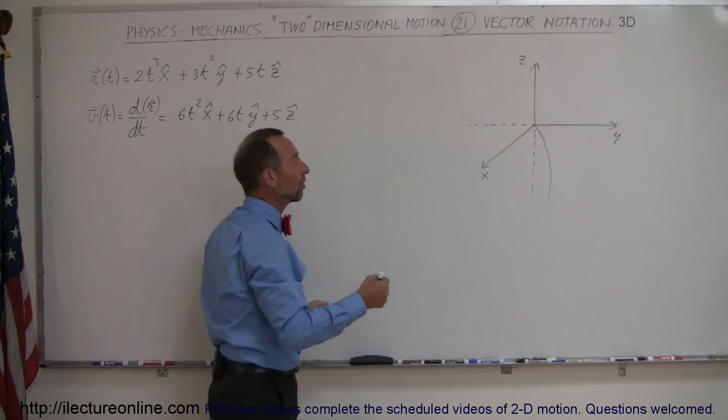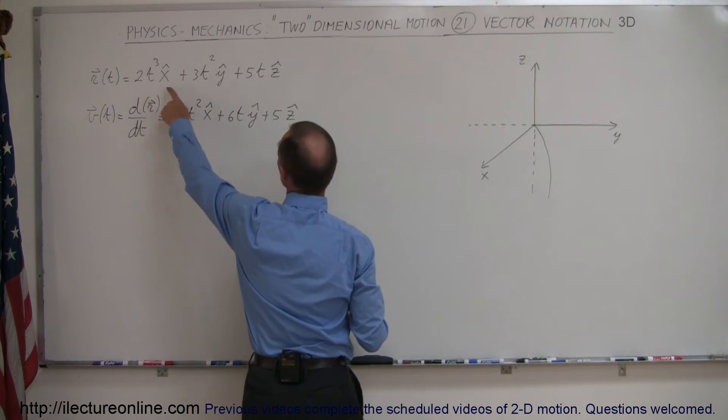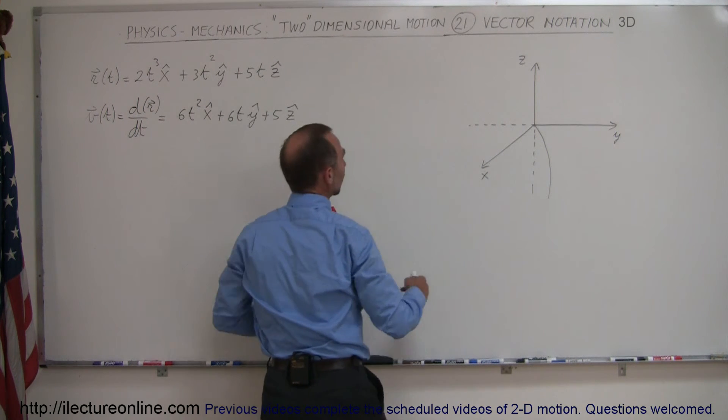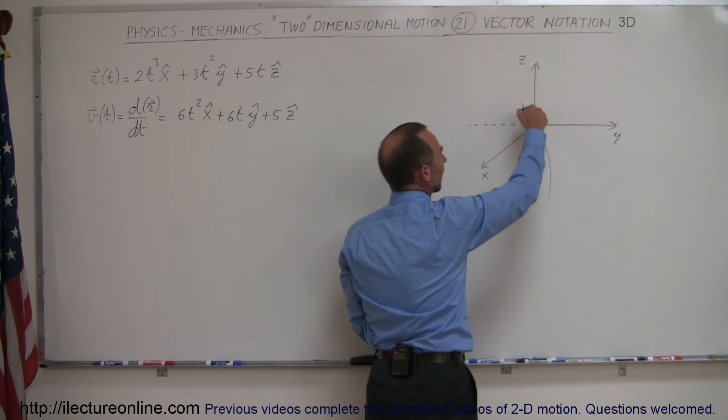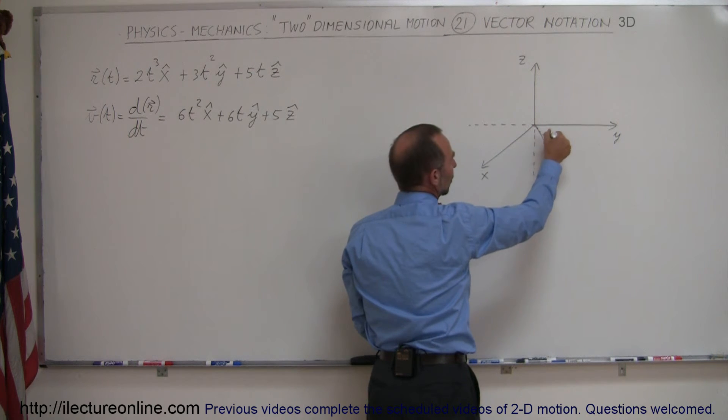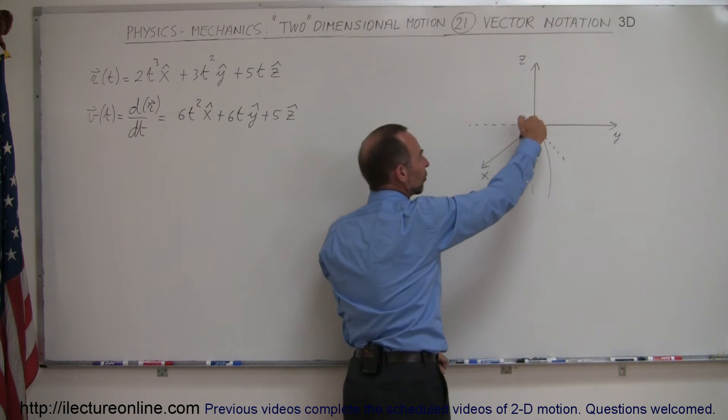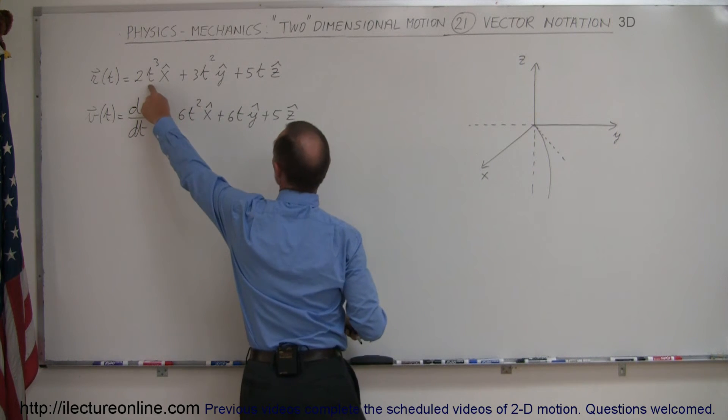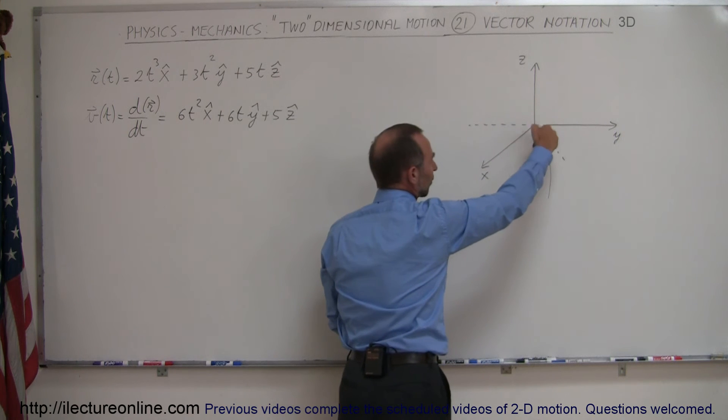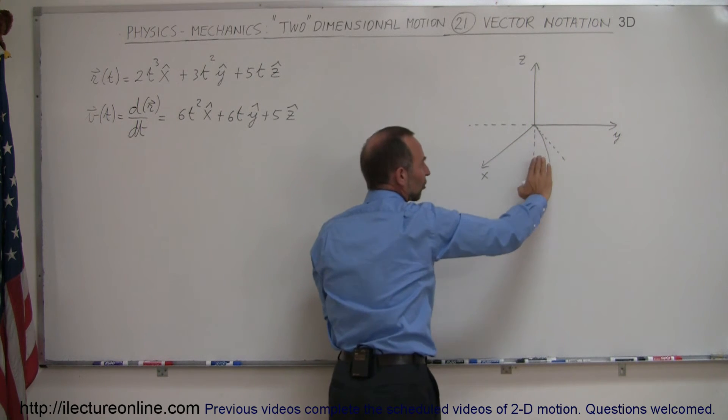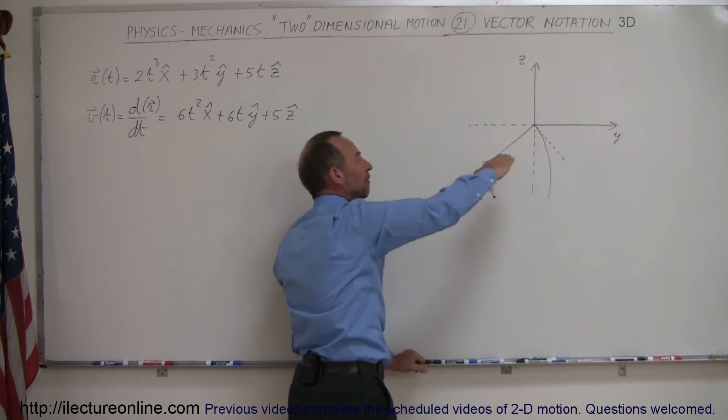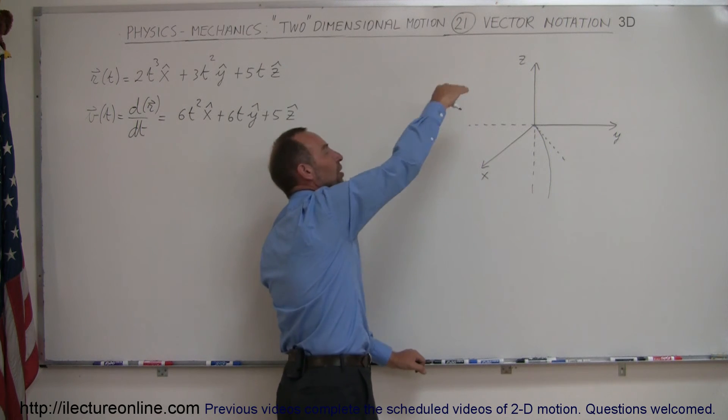You can see that the position would be zero when t equals zero, so you start at the origin. First you start to increase the speed along the x equals y axis, but then since you're accelerating faster in the x direction, the position would curve off and then you would slowly curve off and go up in height in the z direction.